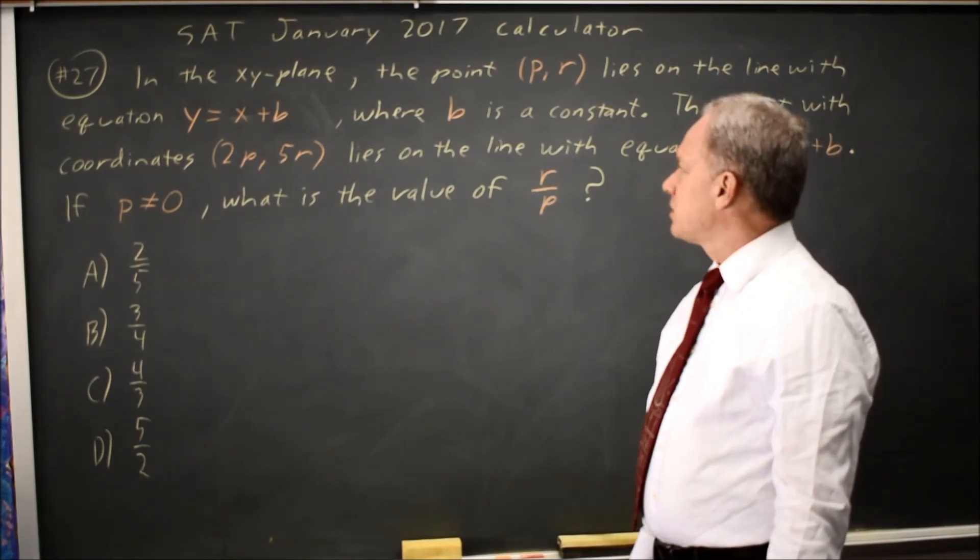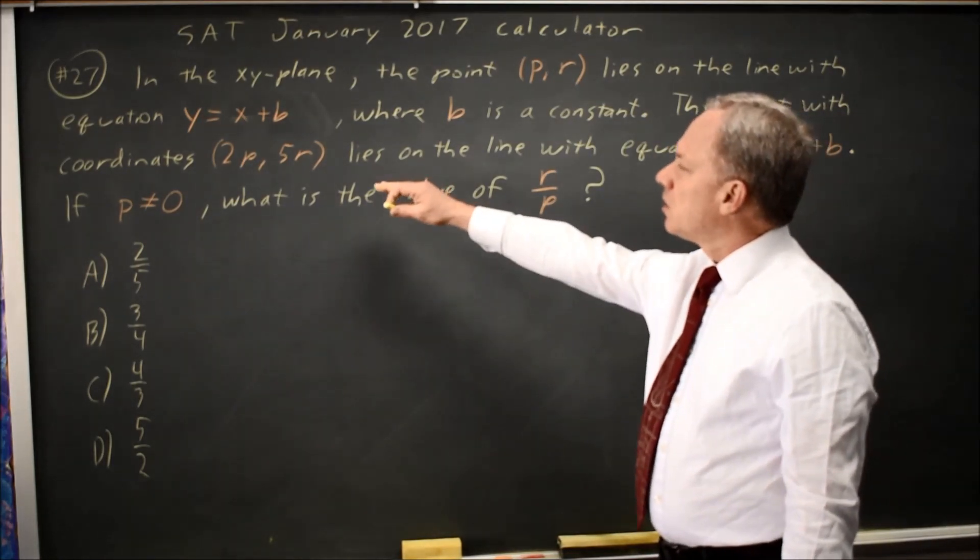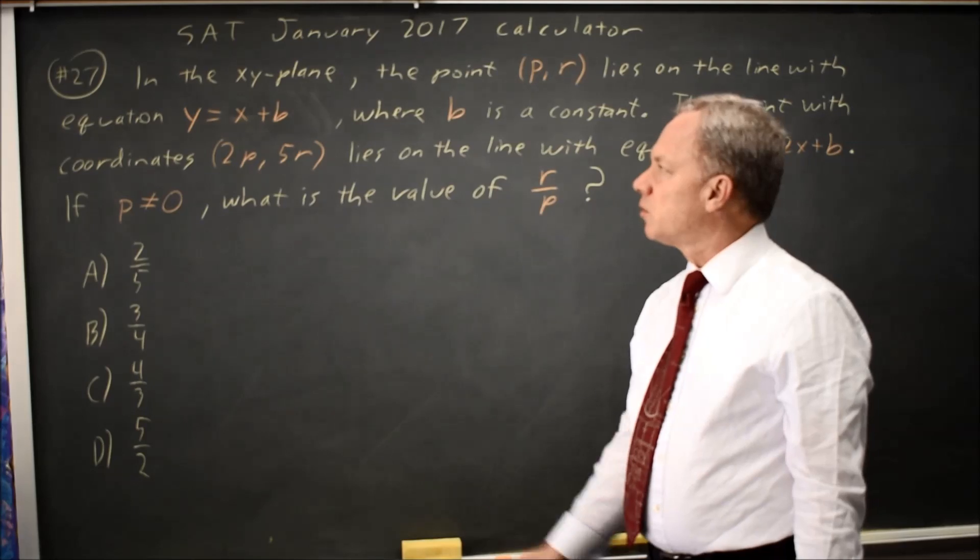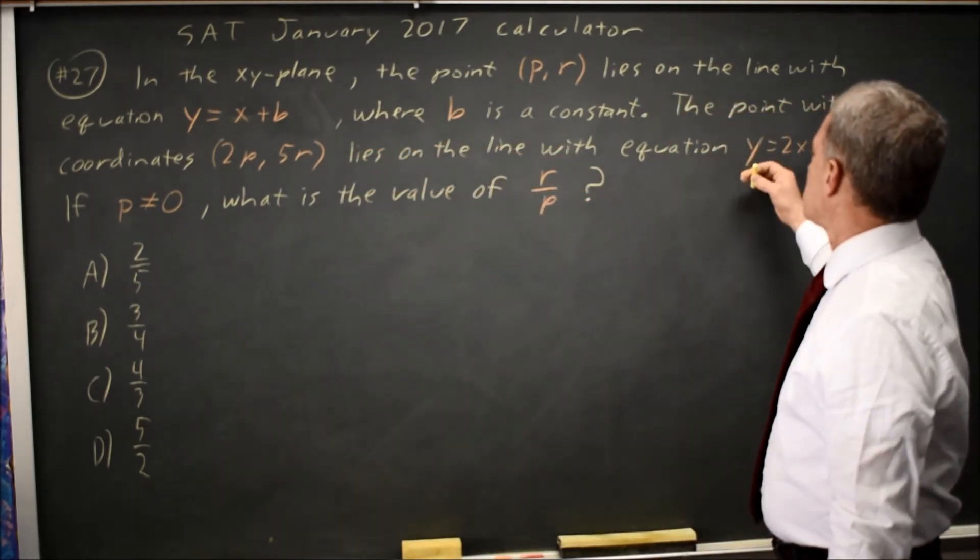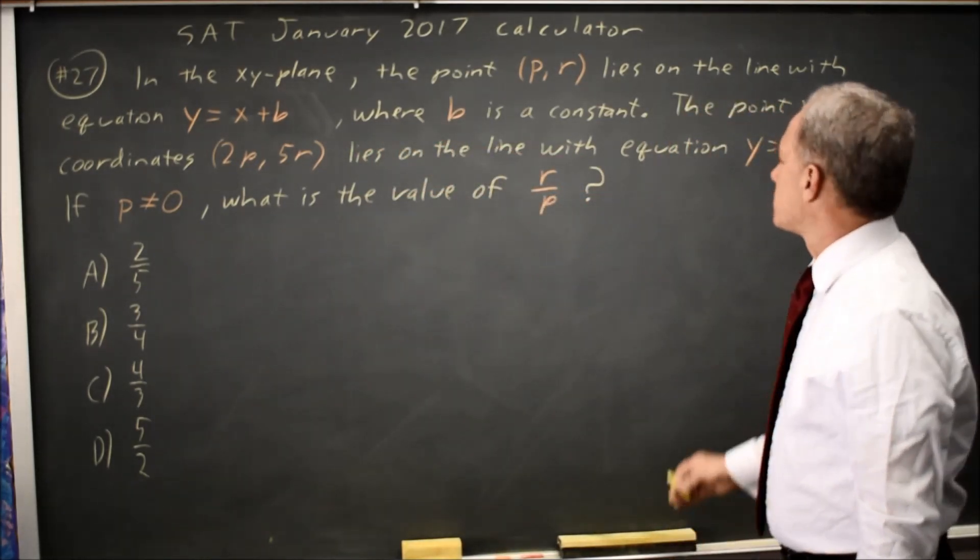We have a system of equations, and we're given a point on each of two lines, y equals x plus b, and y equals 2x plus b.